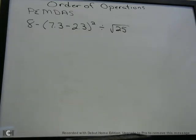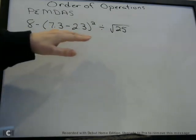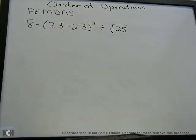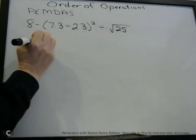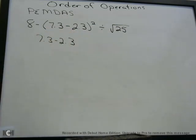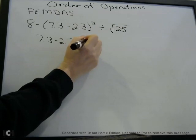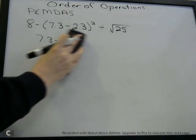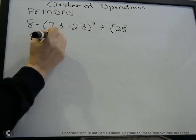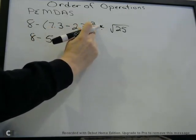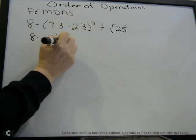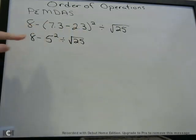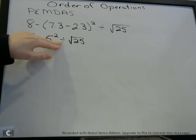So here's another example. Again, we have a mathematical expression that involves subtraction, exponents, and division. So we can't just move left to right — we have to do it in the right order. So we start with P, parentheses. Well, we do have a parentheses. We have 7.3 minus 2.3 in that parentheses, so we evaluate that. What's 7.3 minus 2.3? That's just 5. So instead of writing 7.3 minus 2.3, we're just going to write 5 in there. So I'm going to copy down everything else — it's 5, but you can't forget the exponent that's still on there, so you have to write that squared symbol.